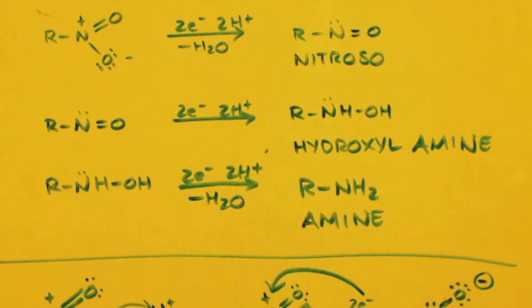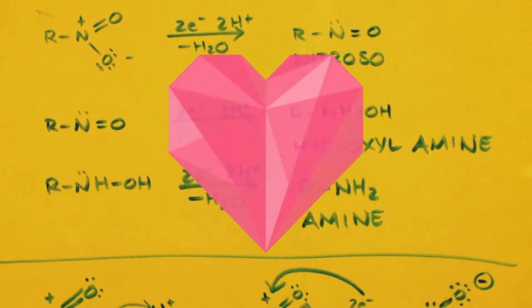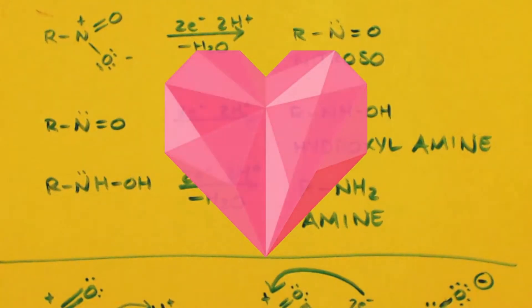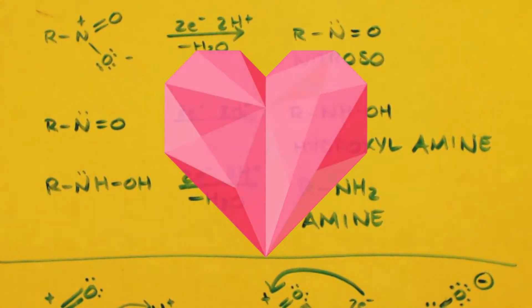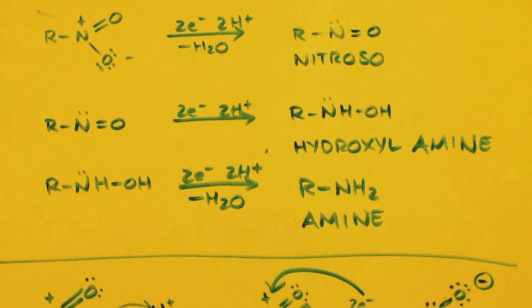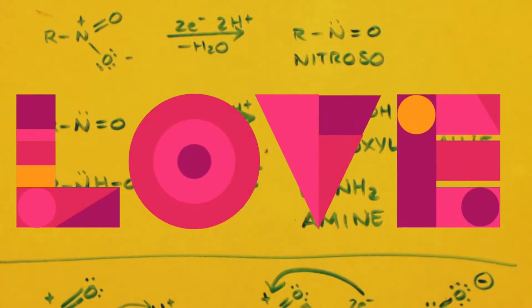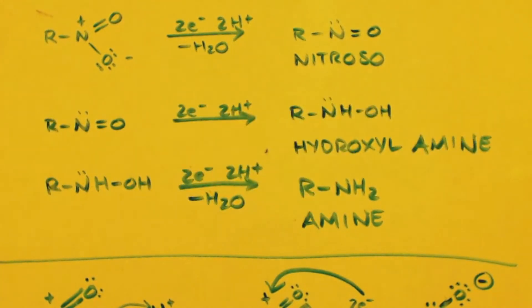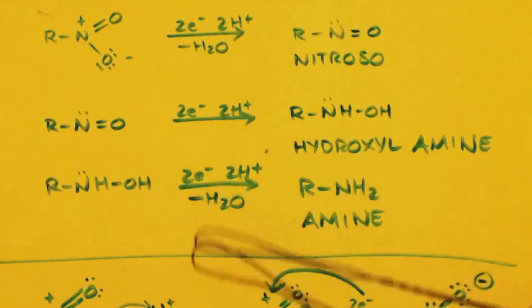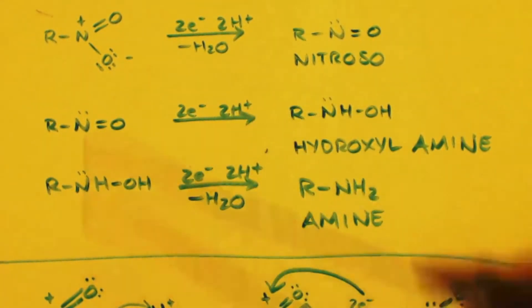Hi, this is John Black, super chemist. I took a guess on the mechanism to change a nitro group into an amine group through metal acid reduction. Here's a generic equation for it.